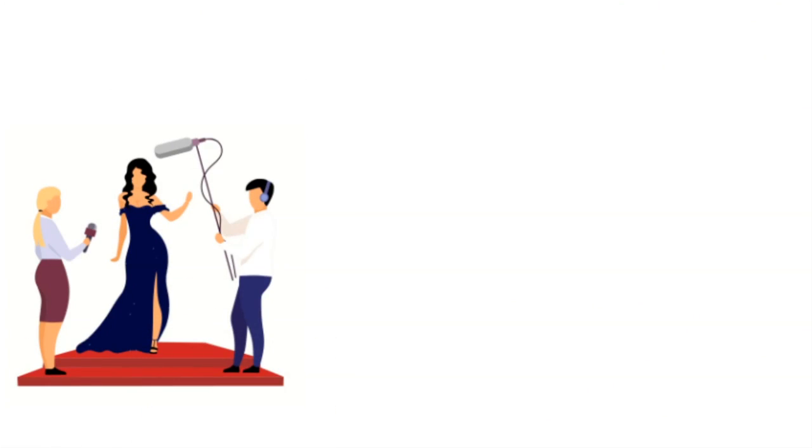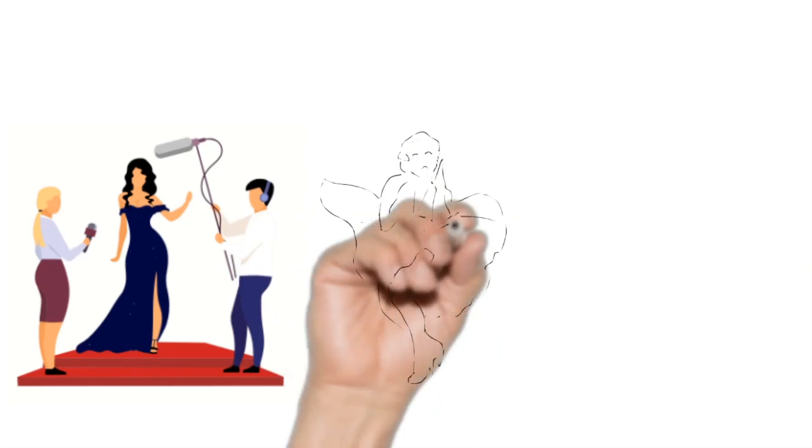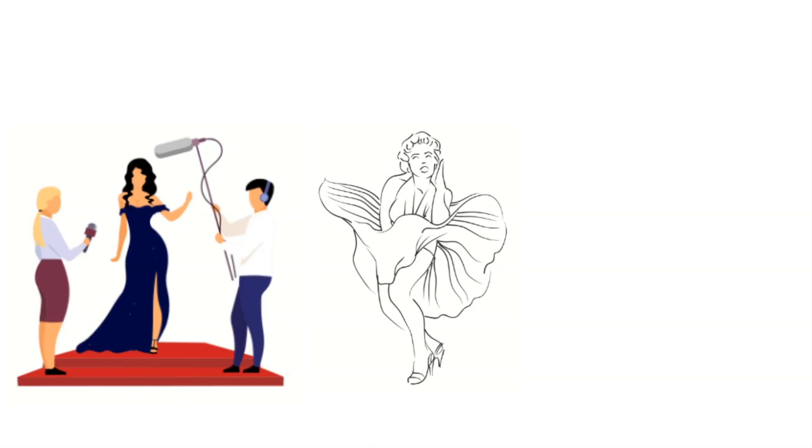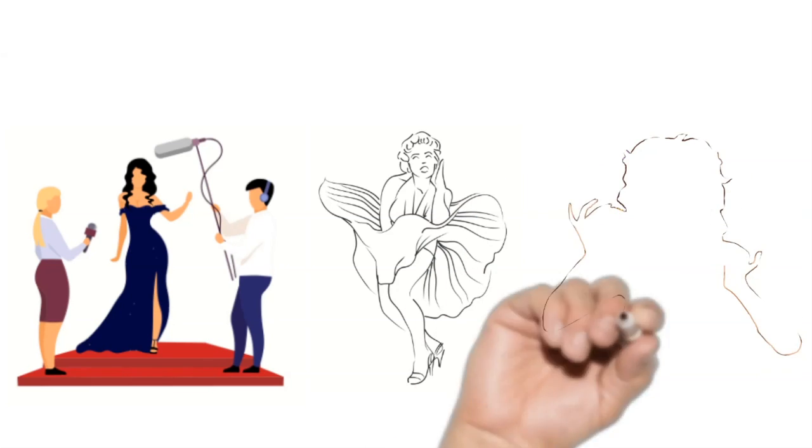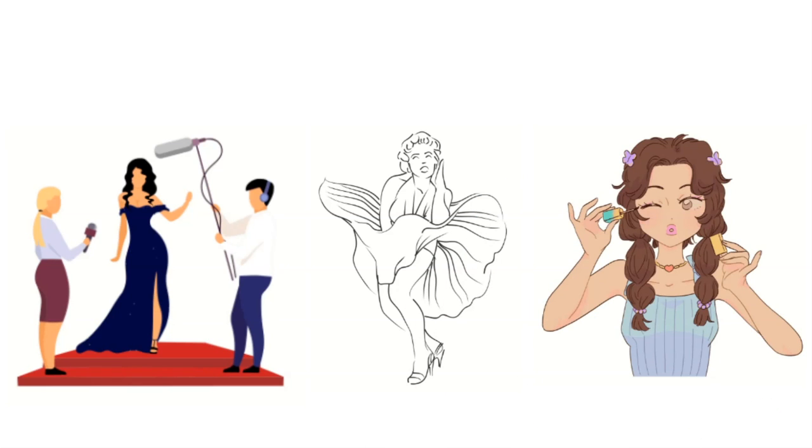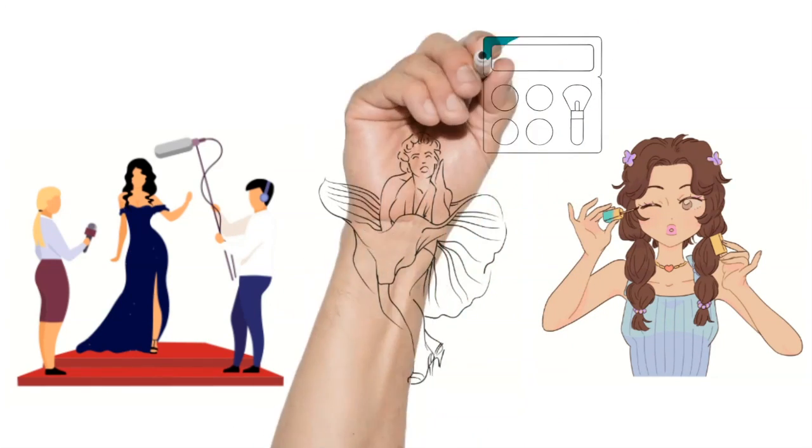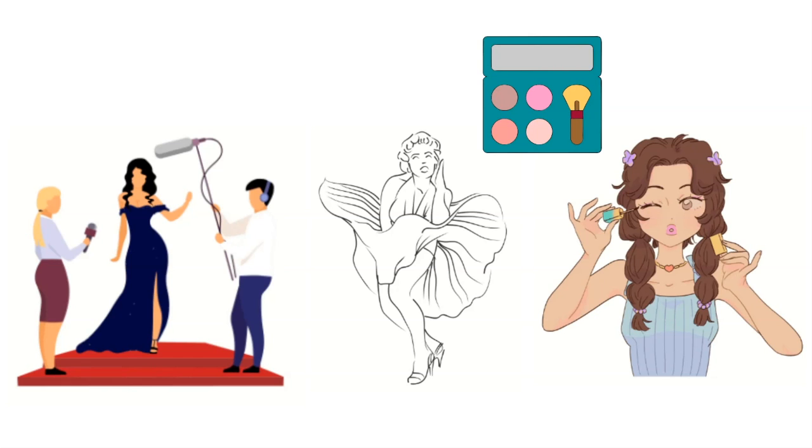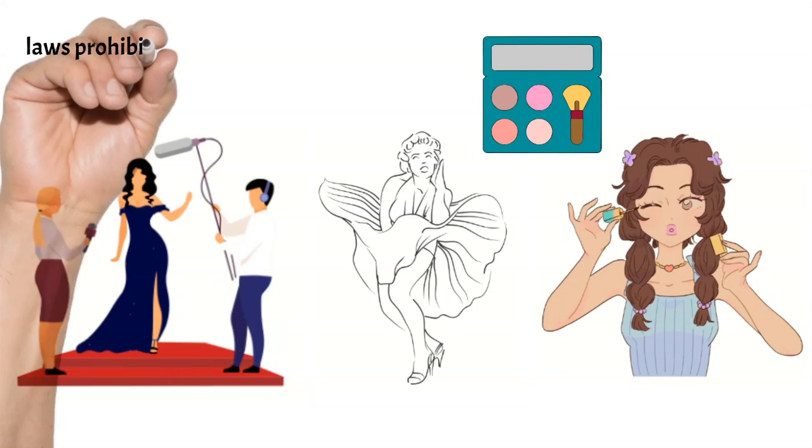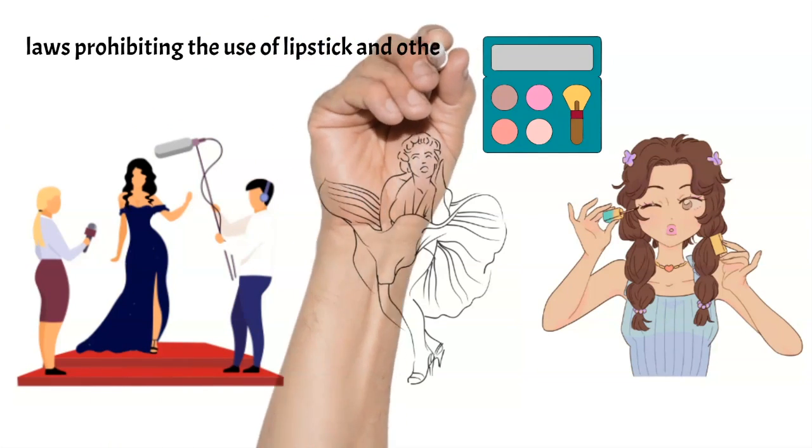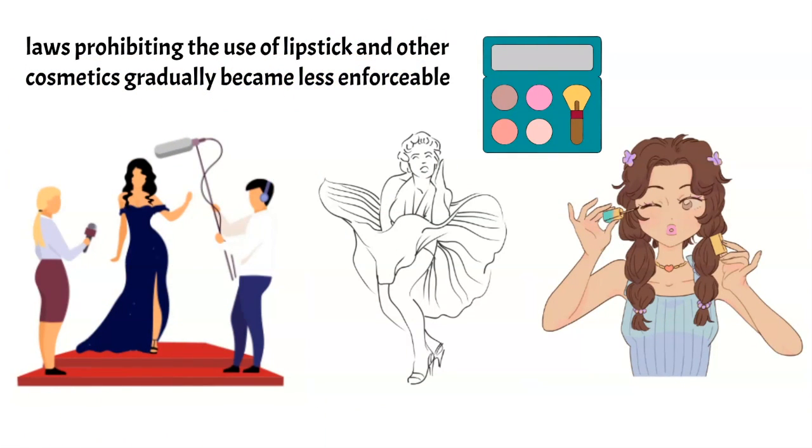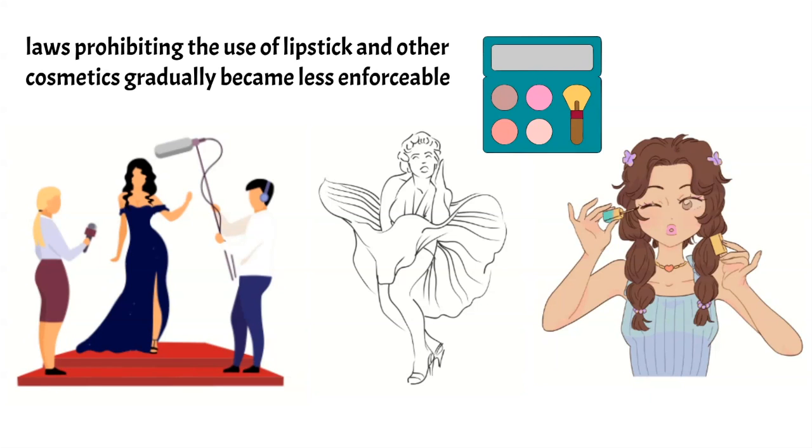Celebrities and popular culture also played a role in changing attitudes towards makeup and fashion. Movie stars like Marilyn Monroe and Audrey Hepburn popularized glamorous and sophisticated looks that included bold lipstick and other cosmetics. The fashion industry also began to embrace a wider range of styles and colors, including bright and bold makeup. As a result of these changing attitudes, laws prohibiting the use of lipstick and other cosmetics gradually became less enforceable, and eventually fell out of use altogether.